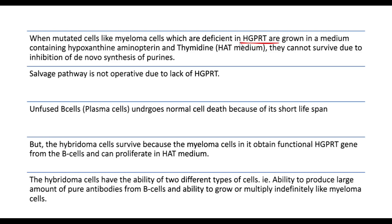We culture the hybridoma cells in HAT medium. HAT medium stands for Hypoxanthine, Aminopterin, and Thymidine. In this medium, both myeloma cells and B-cells are cultured together. Myeloma cells cannot grow in HAT medium because they don't have HGPRT enzyme, so they cannot perform nucleotide synthesis via the salvage pathway.